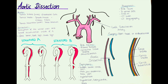In a type B aortic dissection we can usually monitor the patient and help them with conservative therapy. Indications for surgery in type B include mesenteric, renal, or limb ischemia, hemodynamic instability, or rupture of the aortic dissection. The most severe complication of aortic dissection is rupture, leading to severe internal bleeding. Other complications include organ damage such as kidney or intestinal damage, myocardial infarction, or stroke.